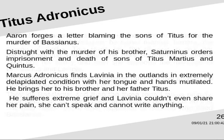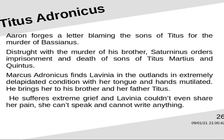Aaron forges a letter blaming the sons of Titus for the murder of Bassianus, though he along with Demetrius and Chiron killed Bassianus himself. Distraught with the murder of his brother, Saturninus orders the imprisonment and death of the sons of Titus, Martius and Quintus, who were subsequently killed.